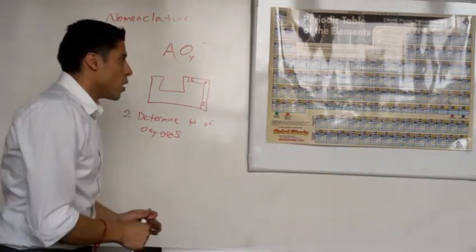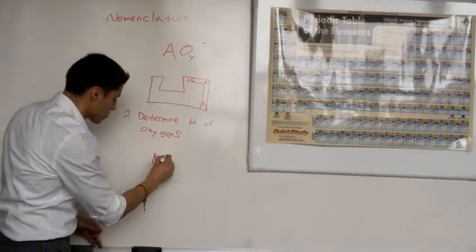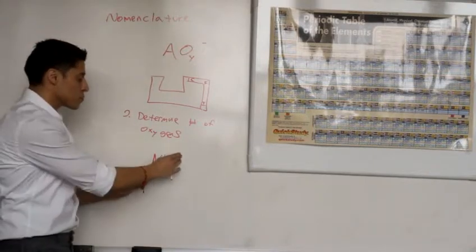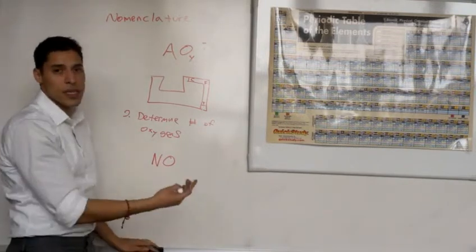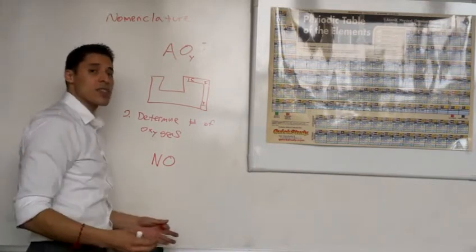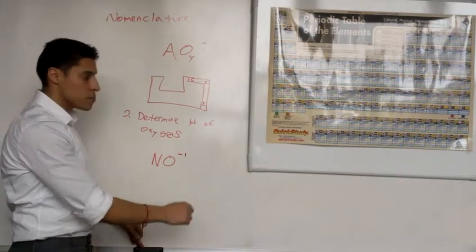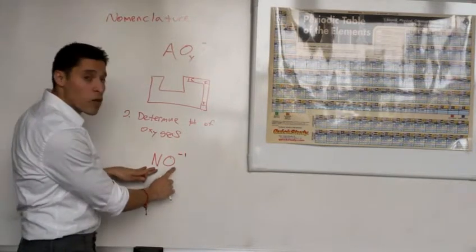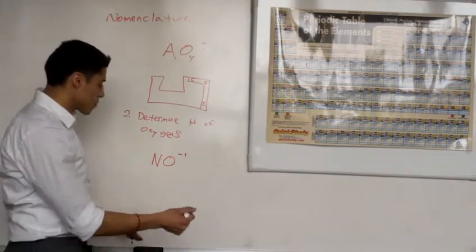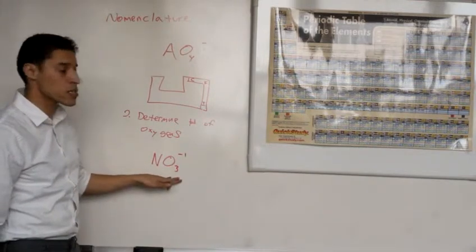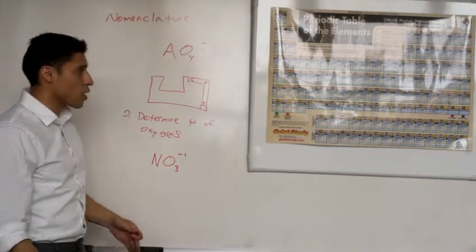Let's do nitrate as a full example. To determine the charge: nitrogen is in the 5A group, oxygen is in the 6A group. We add up the group numbers, giving us an odd number sum. That means nitrate is going to have a negative 1 charge. To determine the number of oxygens: nitrogen lands on the racetrack, so it will always have three oxygens in the '-ate' version. So this is nitrate: NO3 with a negative 1 charge.